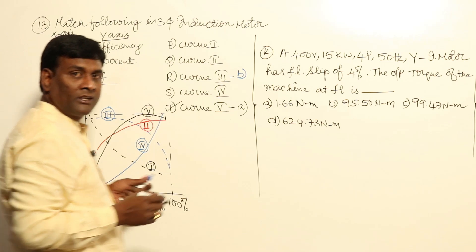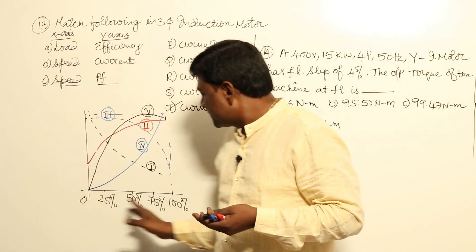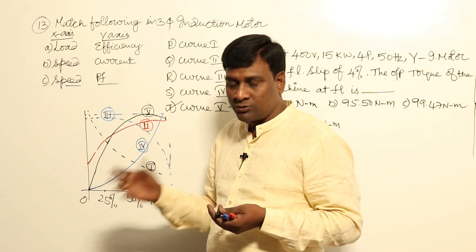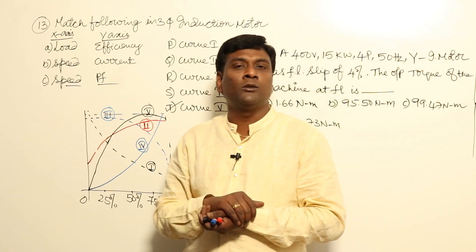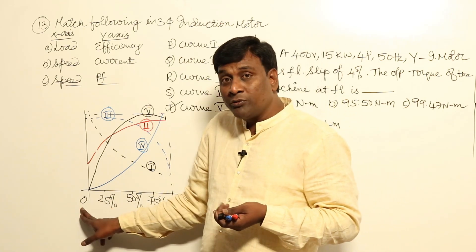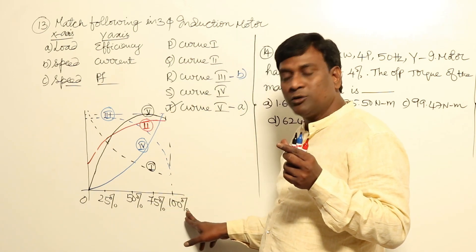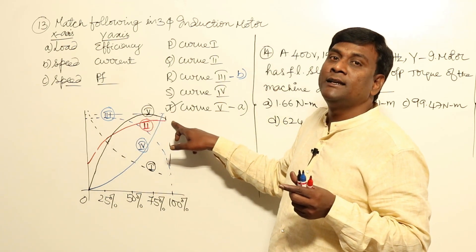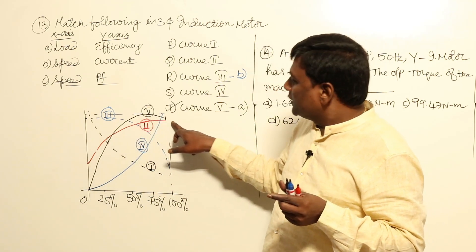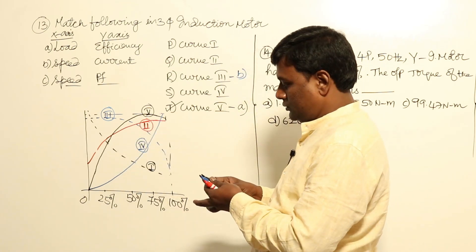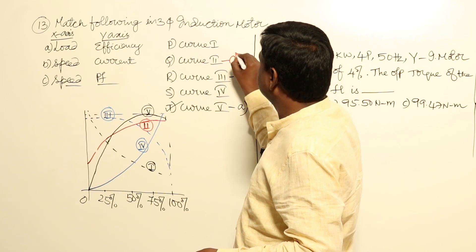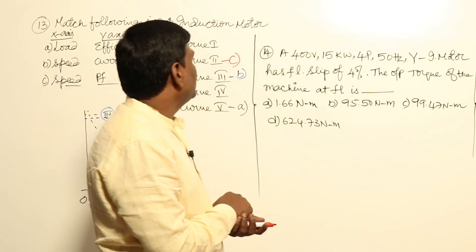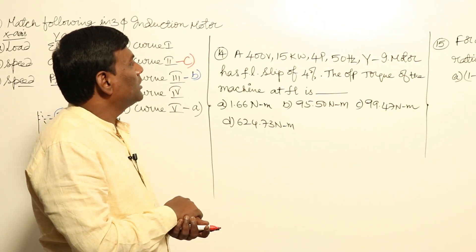For the speed–power factor characteristic: at starting (speed = 0), the power factor is low — that is the disadvantage of induction motors. In running conditions, the power factor improves toward unity. So the curve should show low starting power factor improving at higher speeds — that is curve 2 (red). Some publications have given this incorrectly and need to correct themselves.